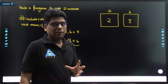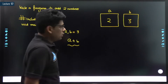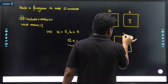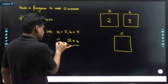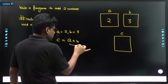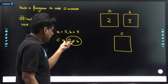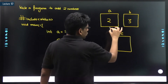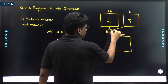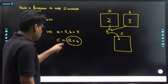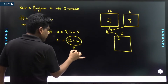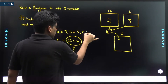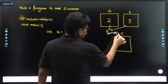Two plus three is five, but we have to store this result. We can store a value inside a variable. So let me take a variable c. What we want is: c = a + b. First, a plus b is performed — what is a plus b? Five. And that five value goes inside c.